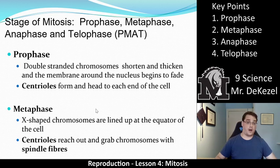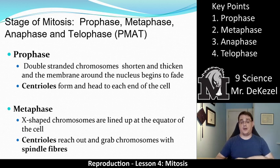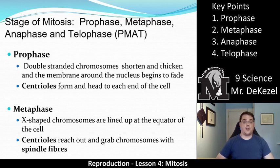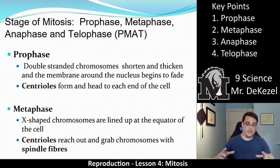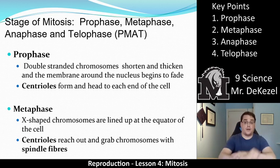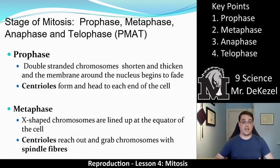I would pause here to write down what is necessary. There's not a whole ton of notes in this lesson, but I'm going to talk about these and the pictures a little bit more in detail. The stages of mitosis are those four. We'll start with prophase. A double-stranded chromosome shortens and thickens, and the membrane around the nucleus begins to fade. Essentially, the nucleus is breaking up and the chromosomes are becoming those X shapes that we talked about.